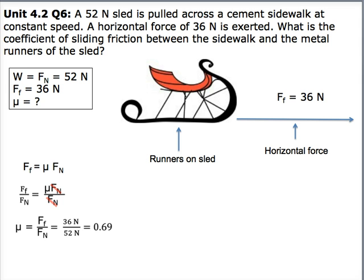After doing these calculations, you should get that 36 Newtons over 52 Newtons equals 0.69. This is your final answer.